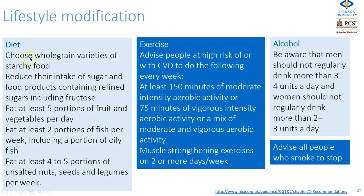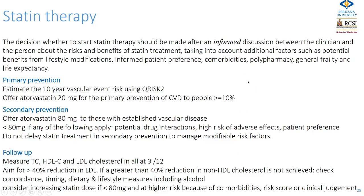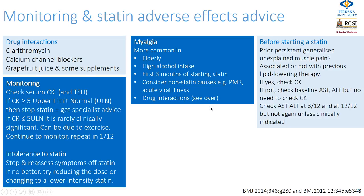For dietary advice, patients should eat whole grain starchy foods, reduce refined sugars including fructose, eat at least five portions of fresh fruit and vegetables per day and two portions of fish per week including oily fish, and have at least four to five portions of unsalted nuts, seeds, and legumes per week. They should take at least 150 minutes of moderate-intensity activity or 75 minutes of vigorous activity per week, plus muscle-strengthening exercises on two or more days per week. Men should not regularly drink more than three to four units per day — UK guidance has recently reduced the weekly limit to 14 units for both men and women. All patients who smoke should be advised to stop.